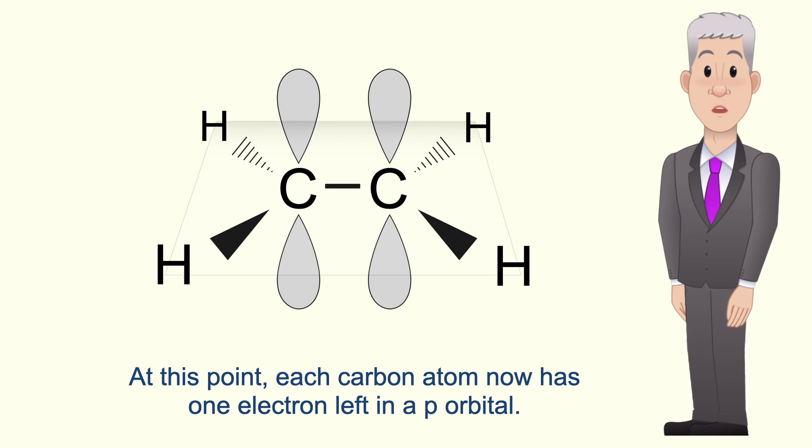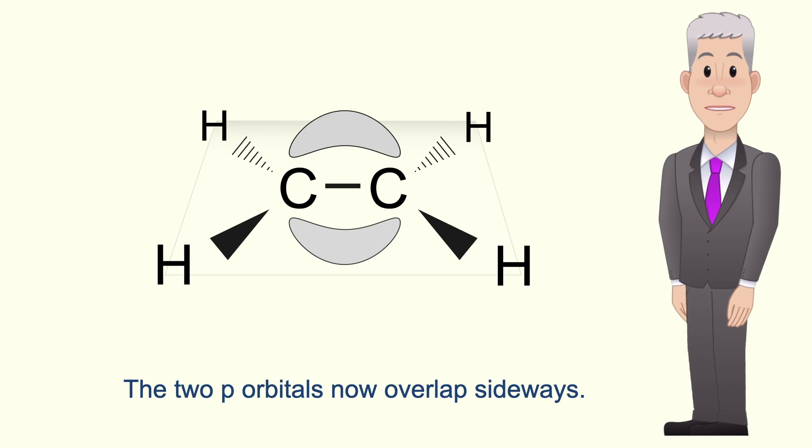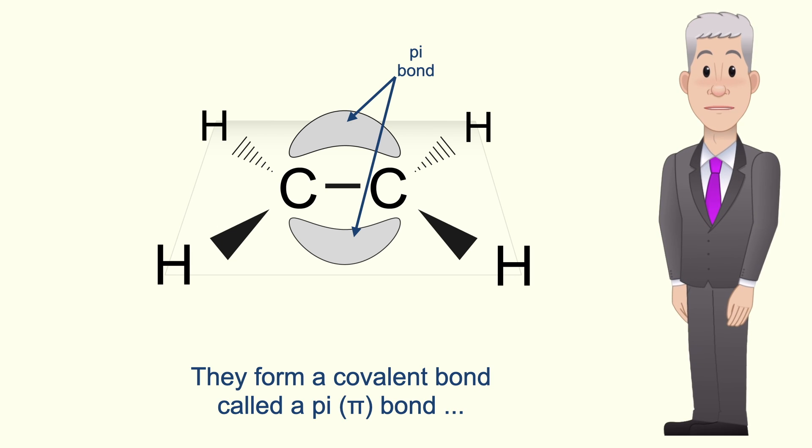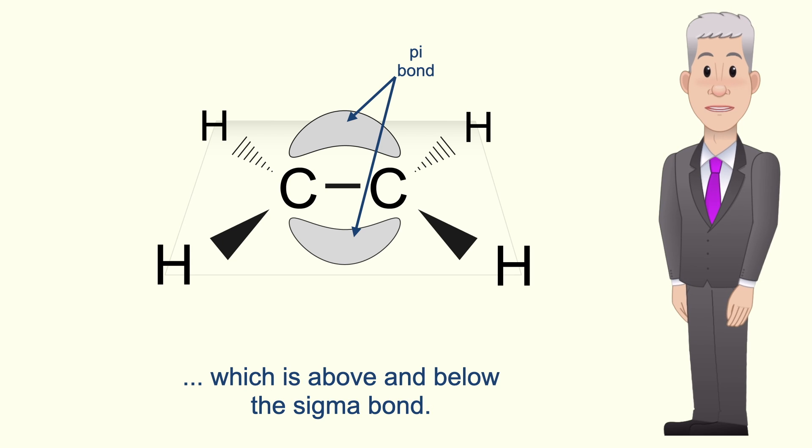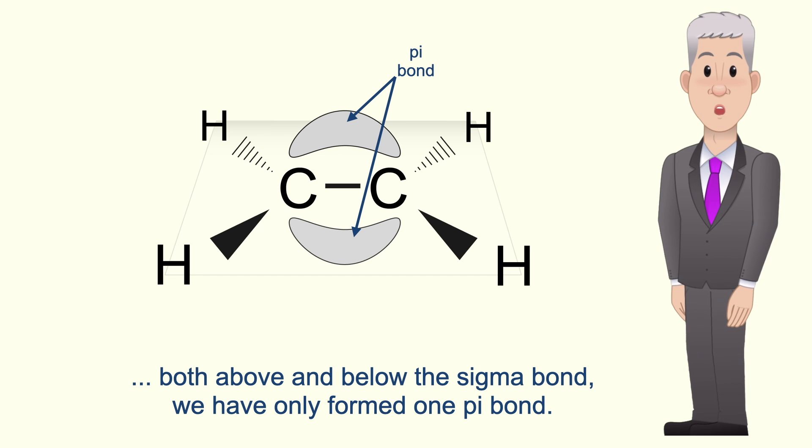At this point each carbon atom now has one electron left in a p orbital. These p orbitals lie above and below the plane of the molecule. The two p orbitals now overlap sideways and they form a covalent bond called a pi bond which is above and below the sigma bond. Now you need to understand that even though the overlap occurs both above and below the sigma bond we've only formed one pi bond.